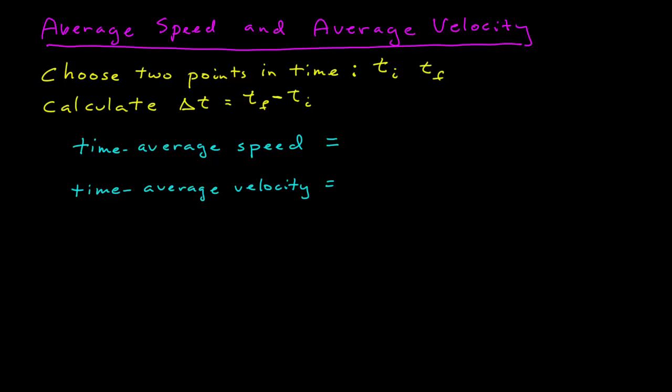The first thing you do is you choose two points in time, which I've identified here as an initial time and a final time. So once you have your initial and final time, you need to calculate the time difference, which is the final time minus the initial time. You've done that? Excellent.